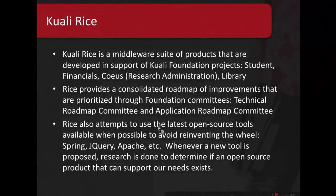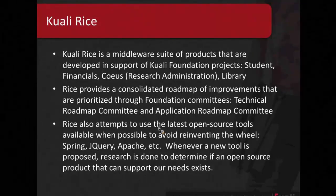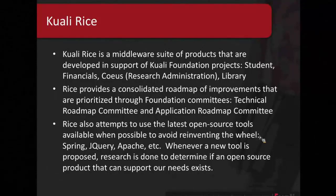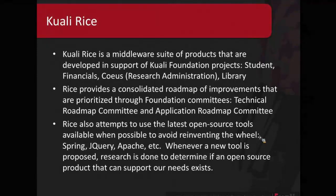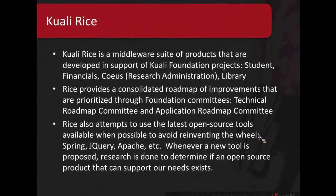There's been a lot of push towards moving away from the not-invented-here paradigm and moving more towards open source tools, and that work has gone really well. We're heavily using Spring, jQuery, Apache, including Apache Commons. Whenever a new tool is proposed, research is done to determine if an open source product can already support our needs. Going forward, you may develop a tool and realize there's nothing out there available, but then a couple of years down the road other open source projects come on. So we have to keep going back and seeing if anything can replace some of our middleware tools — we really don't want to support any more than we have to.